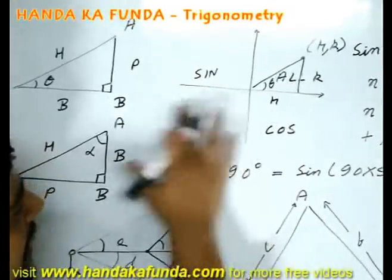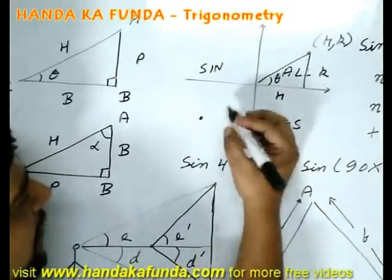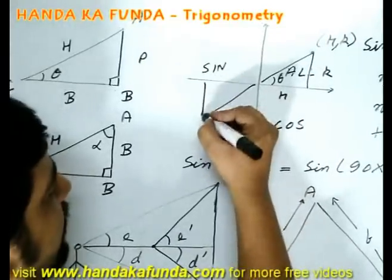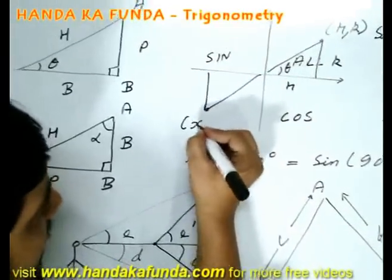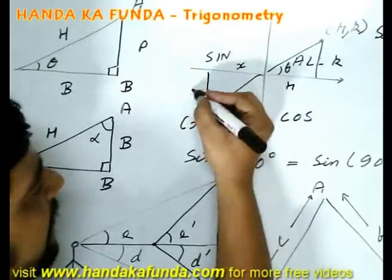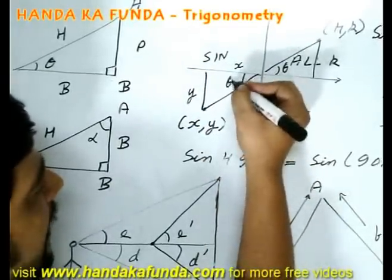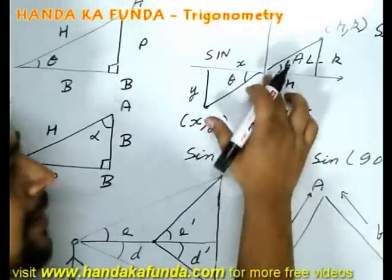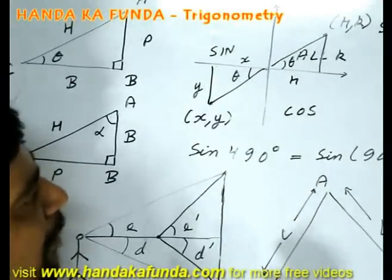But if I am doing the same thing in the third quadrant, what happens then? And this point is say x, y. X component is negative, Y component is also negative. Hypotenuse since it is the distance from the origin is always positive.